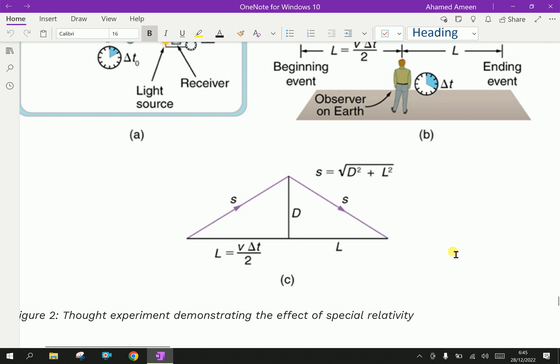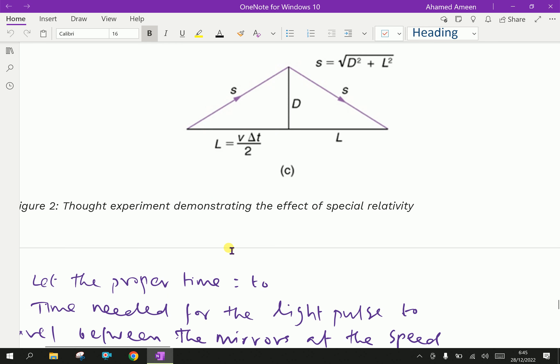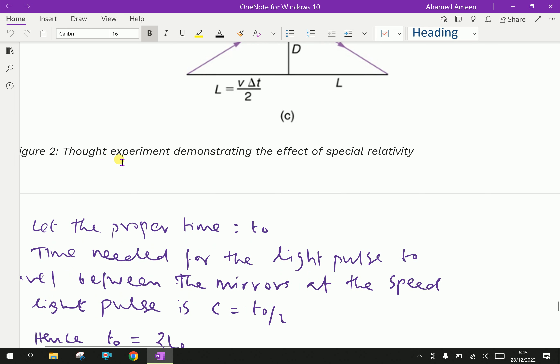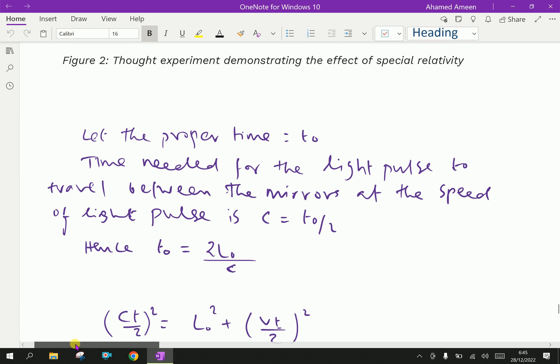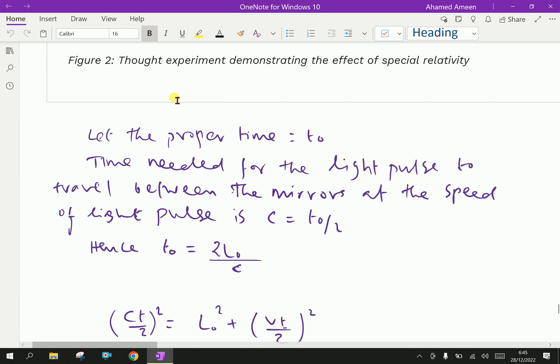Here, this is S equal to square root of D square plus L square. Now, this is a thought experiment demonstrating the effect of special relativity. Now, we will discuss further about these features.